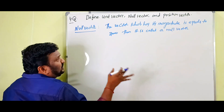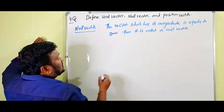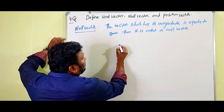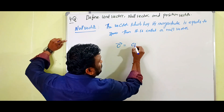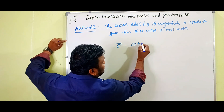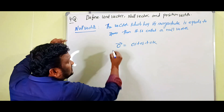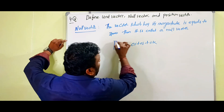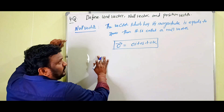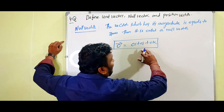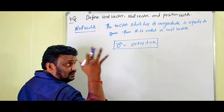The null vector is expressed as: vector equals 0·i + 0·j + 0·k. This is the equation of a null vector. Now, if you have a magnitude of zero, does the null vector have a direction? Yes, a null vector must have a direction.